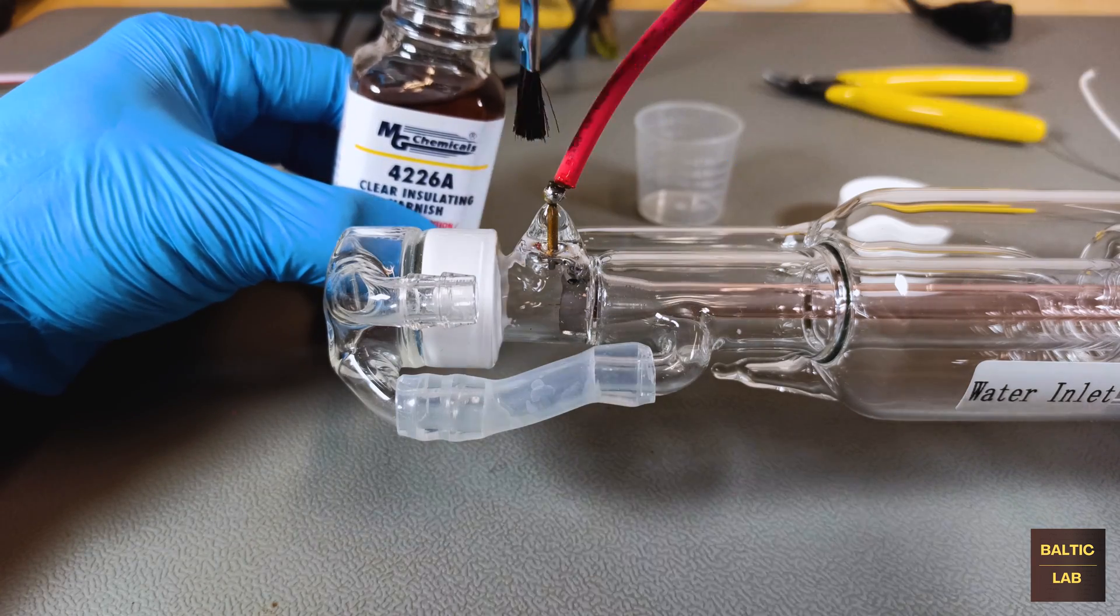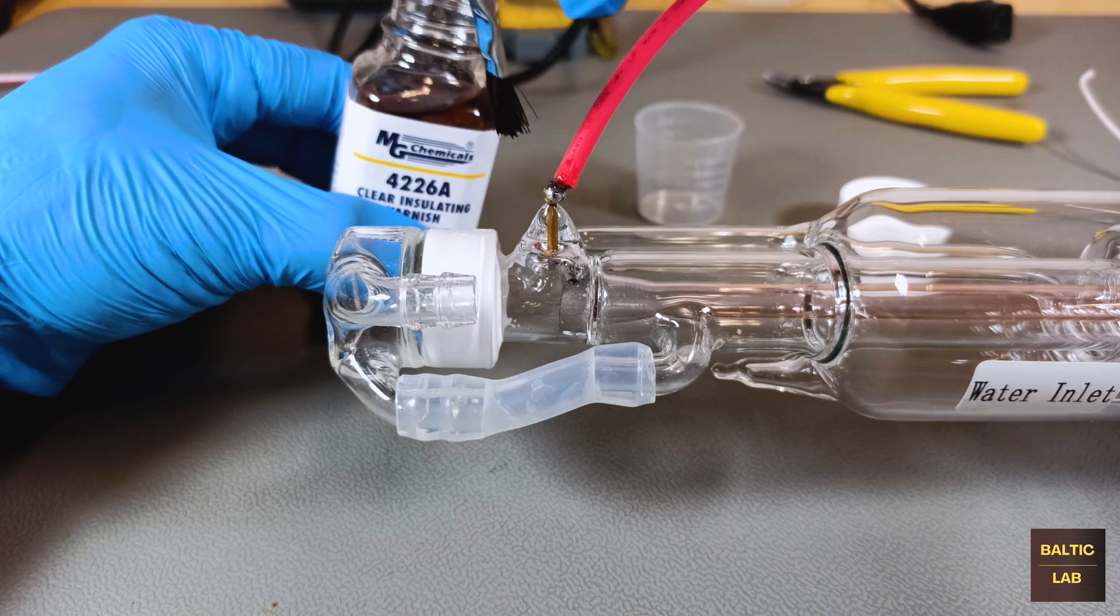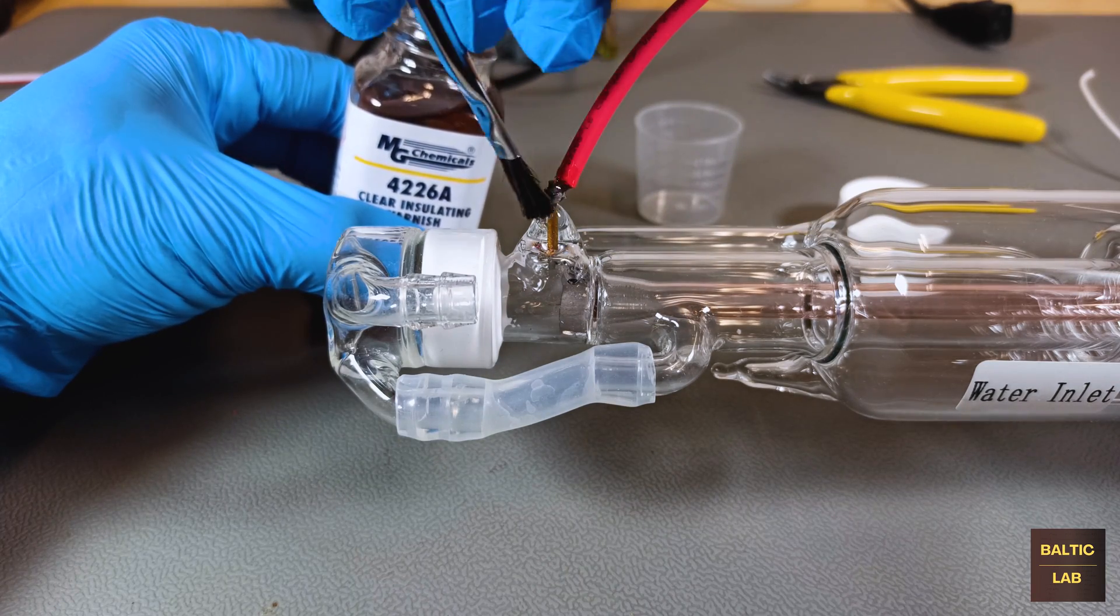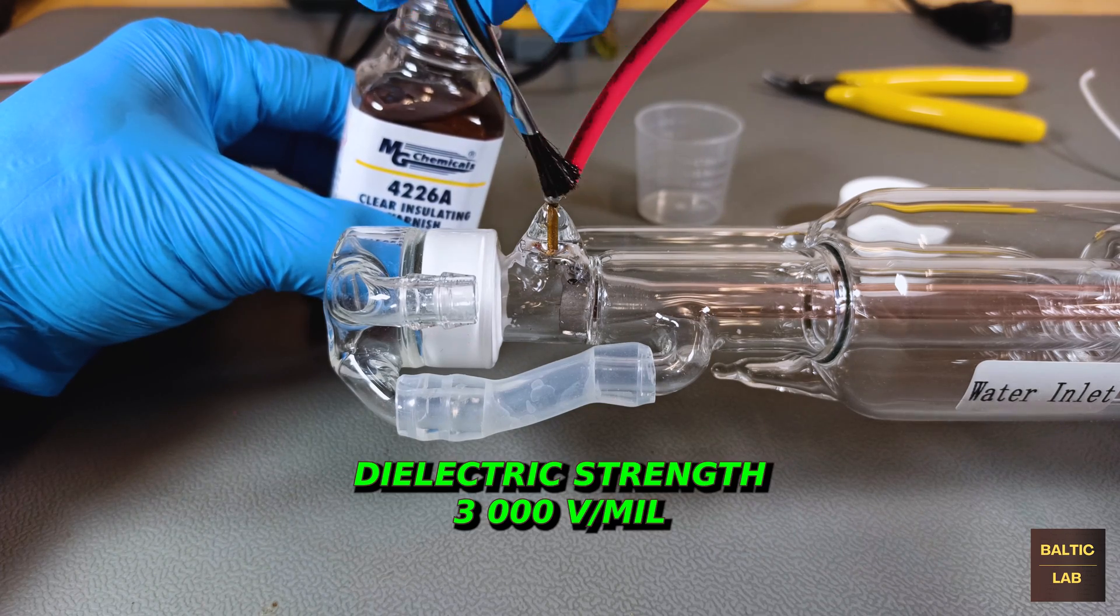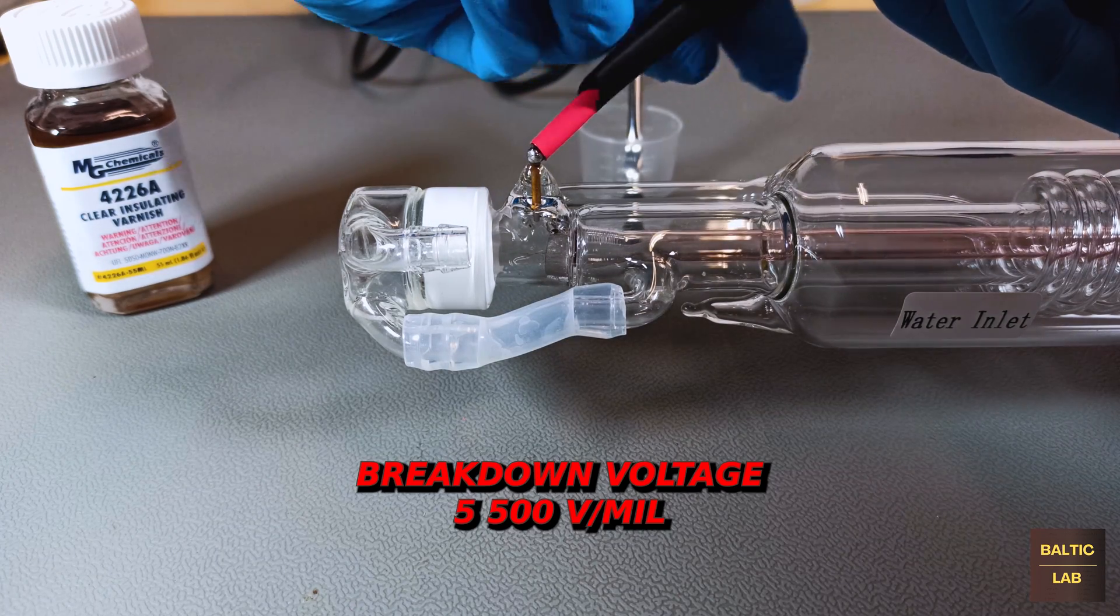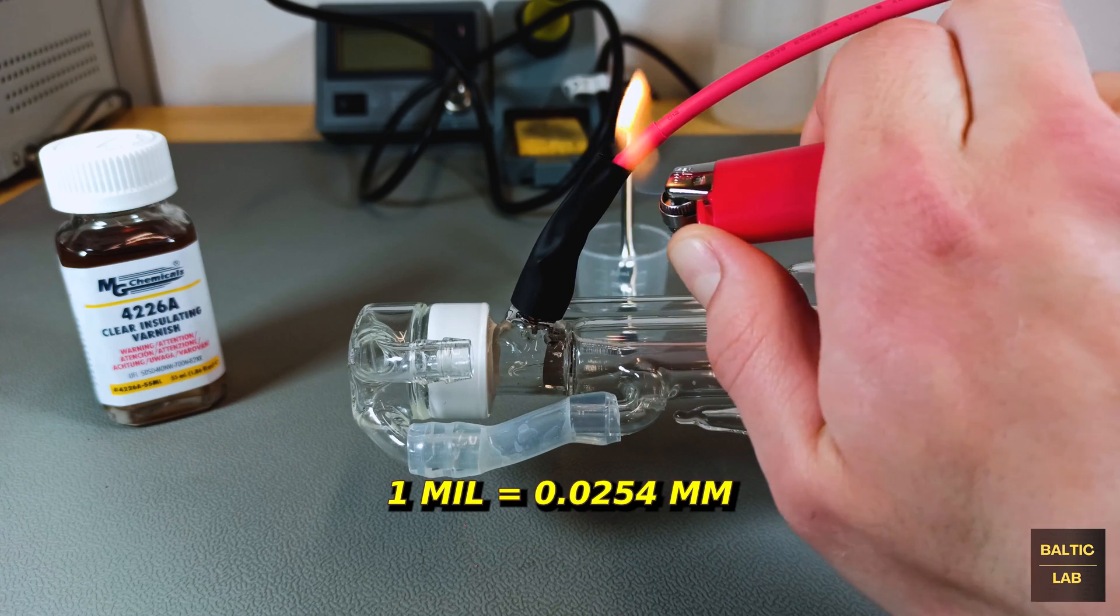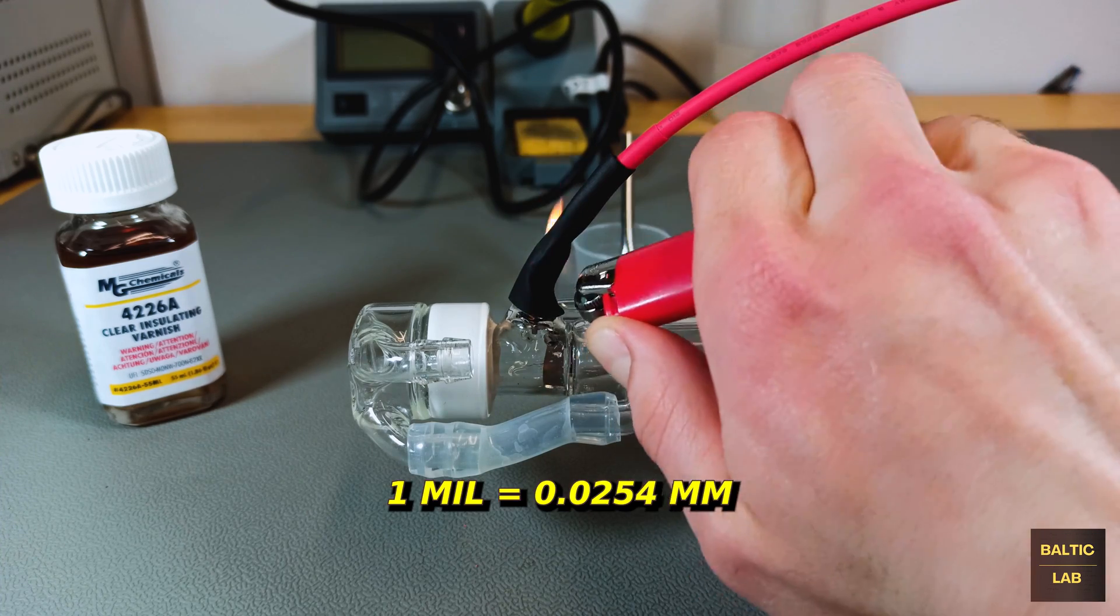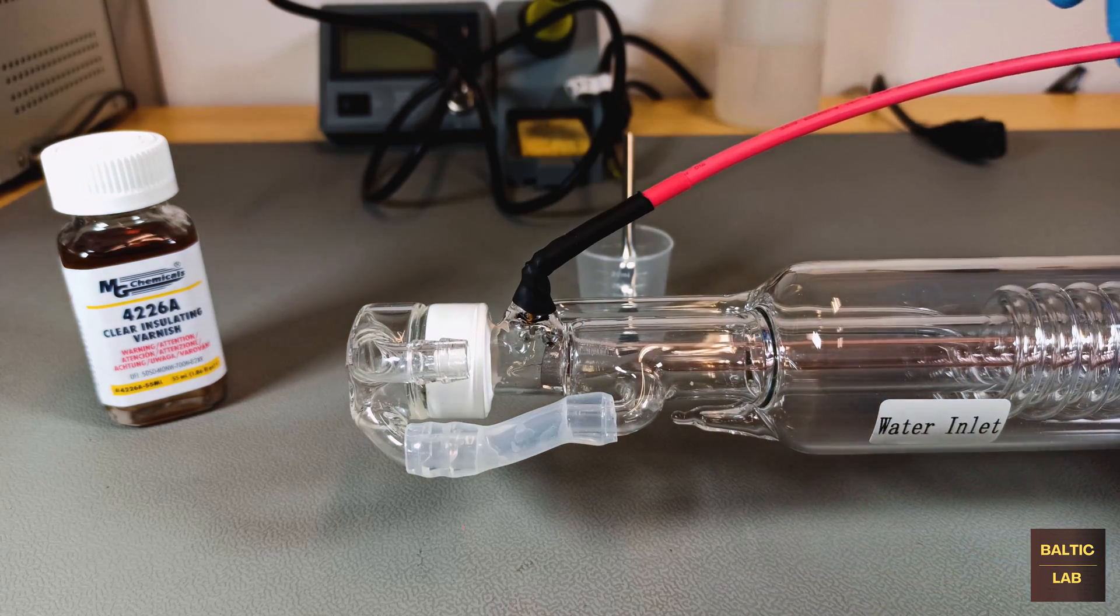This time a lot more care was taken applying the MG 4226A insulating varnish and I actually applied multiple layers and allowed enough time for the previous layer to dry in between. The manufacturer promises a dielectric strength of three kilovolts per mil and a breakdown voltage of 5.5 kilovolts per mil. Just as a reminder a mil is extremely small. One thousandth of an inch or 0.025 millimeters, well I wouldn't say precise because the last digit was rounded, but something in that general neighborhood.